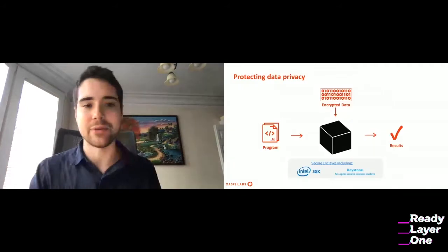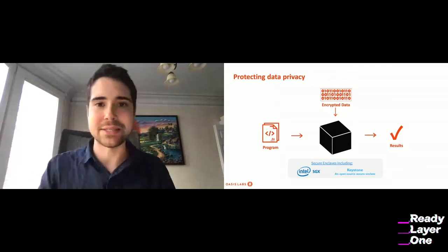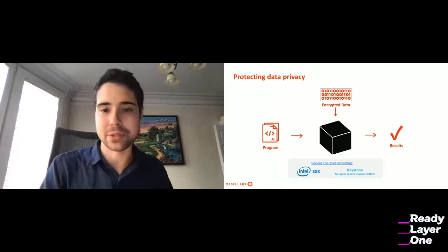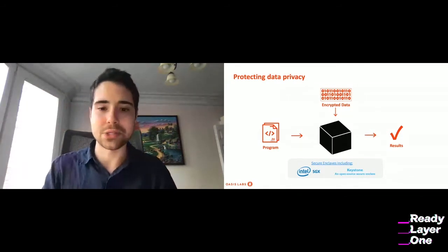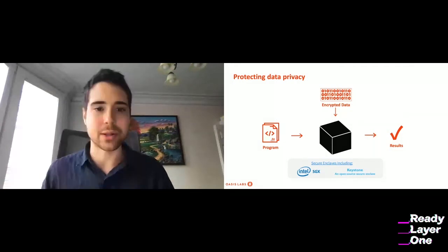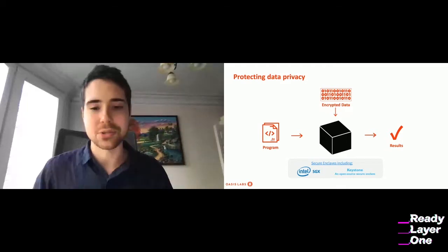Each smart contract runs inside a trusted hardware enclave — SGX, Keystone, AMD's SEV, TrustZone. This coming Q3 we're going to see a lot of developments in the TEE ecosystem. It's not just SGX anymore — there's also SEV, AWS Nitro Enclaves, and Intel's newer version of SGX. TEEs are not dead; TEEs are just getting started.